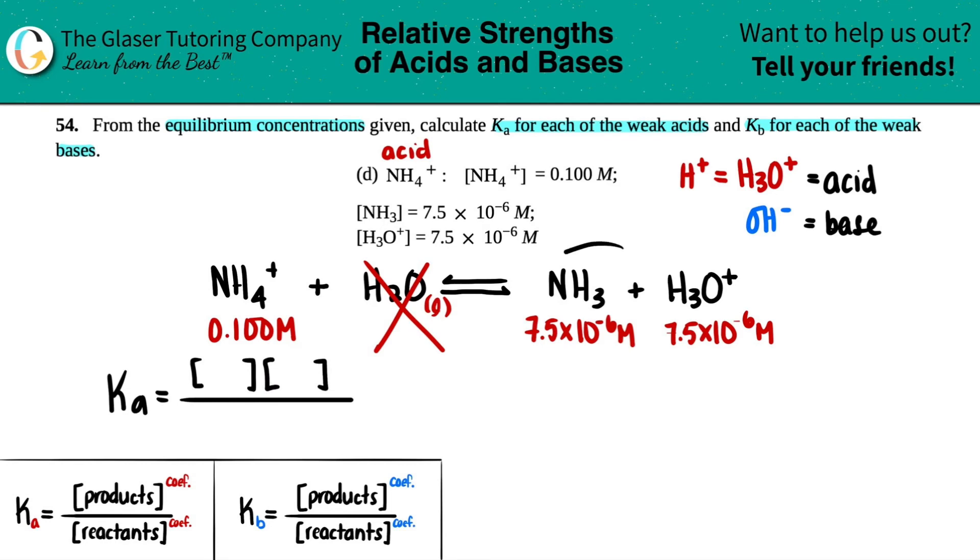So we have Ka = [NH3] times [H3O+] divided by [NH4+]. Let's put the numbers in.